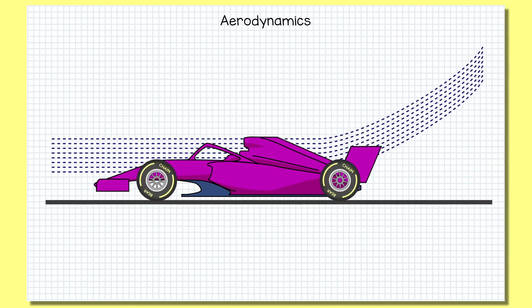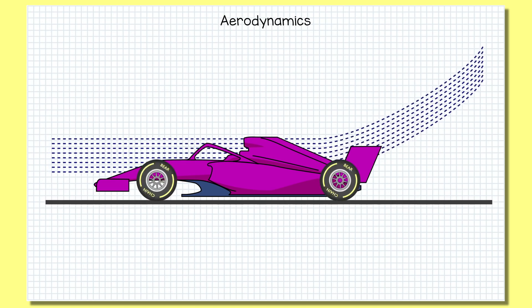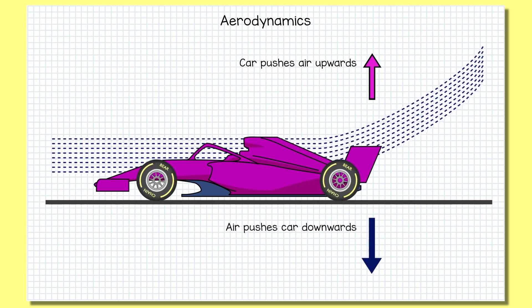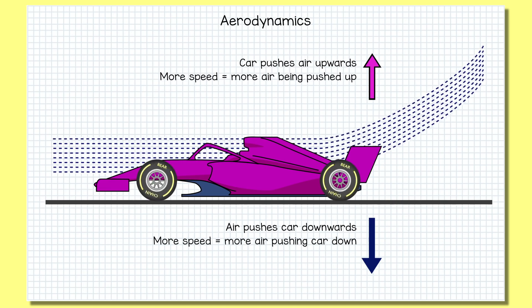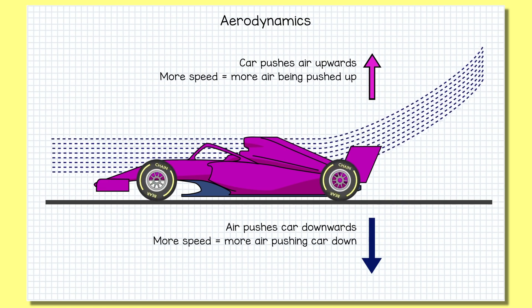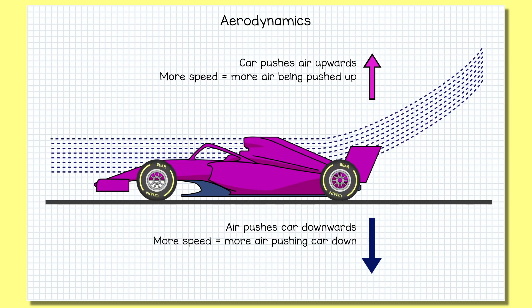We've gone into much detail before about how downforce is generated, but put simply, the more air that car can heave upwards, the more that air will push the car back down. An equal and opposite reaction. The car pushes the air up, the air pushes the car down. That's why downforce increases as the car's speed increases. It passes through more air every second, so it pushes more air up every second and so the air pushes down harder on the car every second.